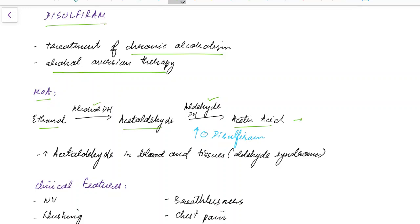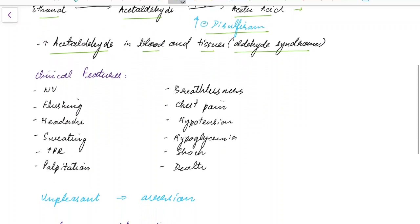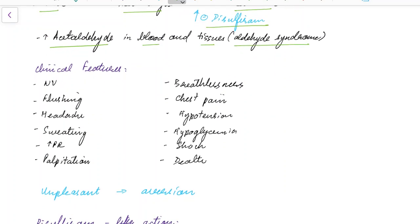Now disulfiram inhibits aldehyde dehydrogenase. This leads to the accumulation of acetaldehyde in blood and tissues. This causes various clinical features and this is known as aldehyde syndrome.